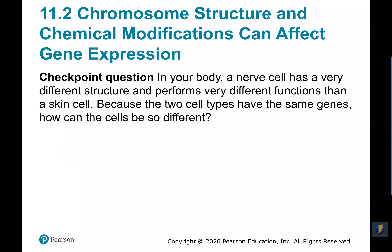Every single cell in your body has the same genes — the exact same DNA in a nerve cell as in a skin cell — even though nerve cells with their long arms are very different from short, flat, scale-like skin cells. The nucleus of a skin cell has exactly the same DNA as the nucleus of a nerve cell. The difference comes from selective gene expression: the skin cell activates some genes on the DNA, while the nerve cell activates a different set, allowing them to differentiate and become structurally and functionally different.